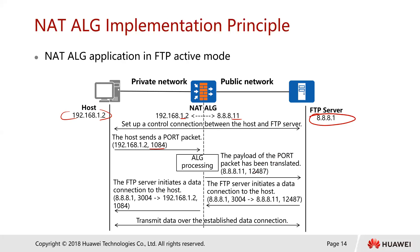The ALG application level gateway starts processing, and the payload of the port packet is translated and sent to the FTP server. At this point, the FTP server initiates a data connection to the host, providing its source details and port. The ALG translates those back accordingly. The FTP server then initiates a data connection to the host using those translated details. Once establishment is complete, data can be transmitted over the data connection.